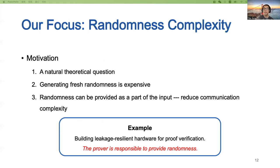Private circuits also gain popularity as a practical method for higher-order masking countermeasures that protect embedded devices against realistic side-channel attacks. In this work, we are interested in the randomness complexity of private circuits, which is the natural theoretical question for this notion. The study of randomness complexity can also be motivated by the fact that generating fresh randomness is expensive in practice. In the scenario where randomness is provided as part of the input, reducing randomness complexity means reducing the size of the input, and in some cases this can be translated to an improvement in communication complexity.